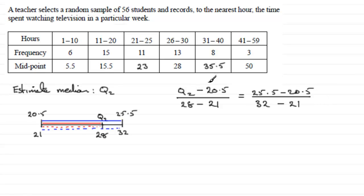So once we've got our ratio equation set up, all we need to do is just rearrange it for Q2. So therefore, Q2 will equal, well, if we do 25.5 minus 20.5, that's obviously going to give me 5. So we've got 5 there over 32 take away 21. So that's 11. And if I do 28 minus 21, that's 7. And I can multiply both sides by that value, 7. And then finally add on the 20.5.